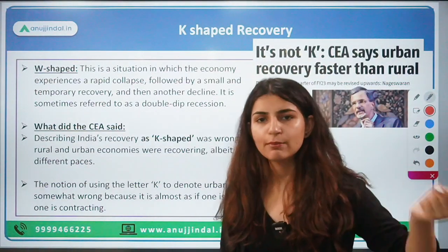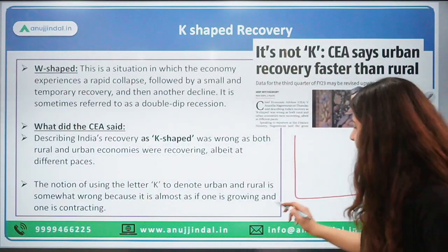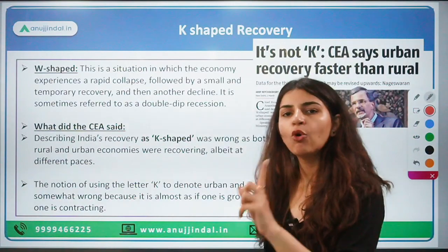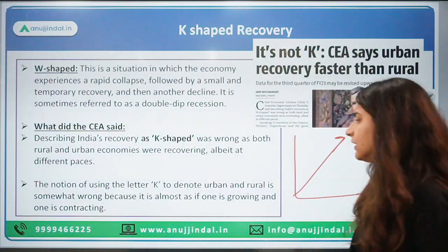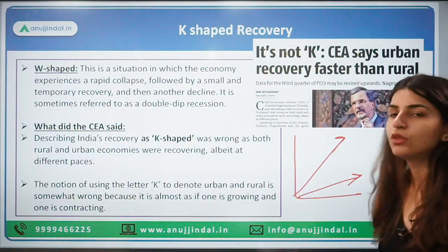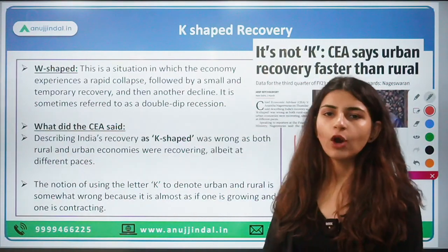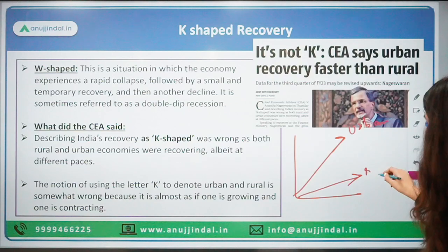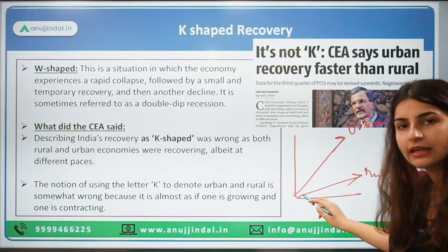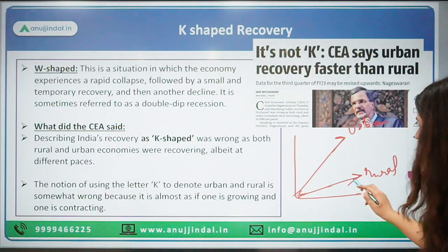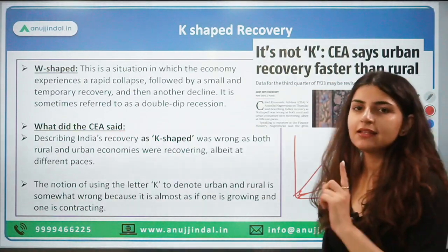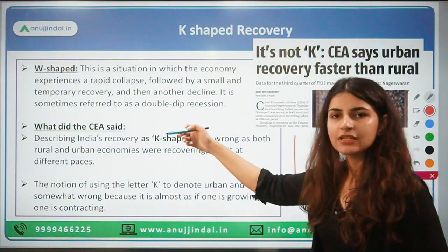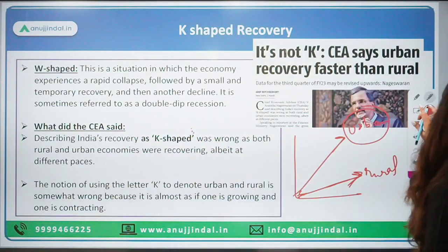The rural economy is not collapsing or contracting — demand is there in the rural economy as well, but not as much as urban consumption or urban demand. Urban demand is higher, there is more growth in the urban sector, but the rural sector is also growing, just not at the same pace. So it is wrong to say it is a K-shaped recovery because the rural sector is not contracting — it is still increasing.